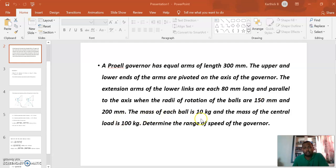The mass of each ball is 10 kg and the mass of the central load is 100 kg. Now we're going to determine the range of speed of the governor with this data.